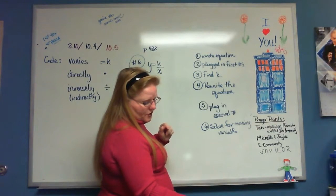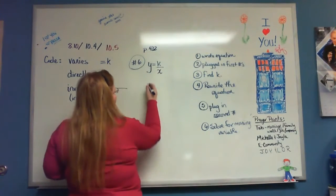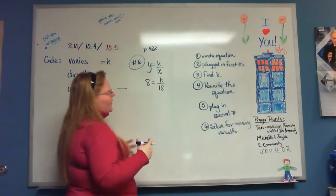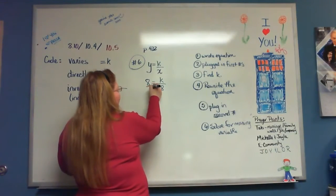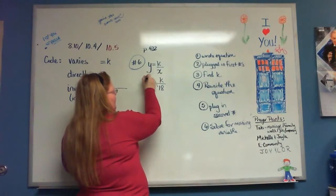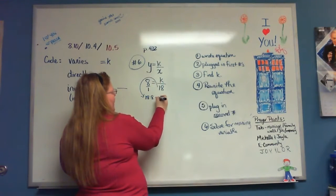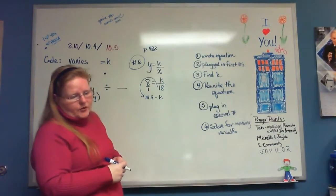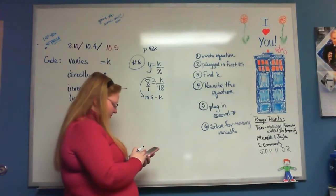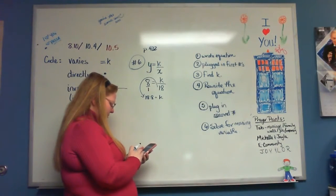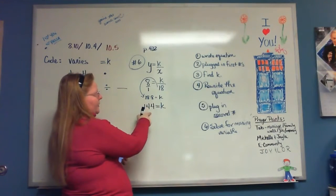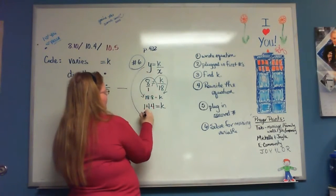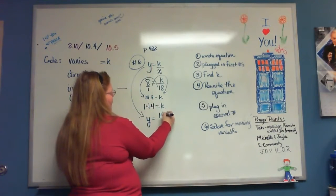I plug in my first numbers: Y equals 8 when X equals 18. So 8 equals K over 18. This is a fraction equal to a fraction, so I can cross multiply: 18 times 8 equals K times 1, or K. 18 times 8 is 144, so 144 equals K. Now that I know K, I rewrite my equation: Y equals 144 over X.